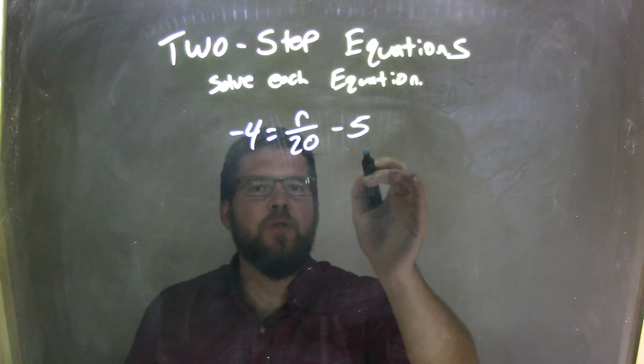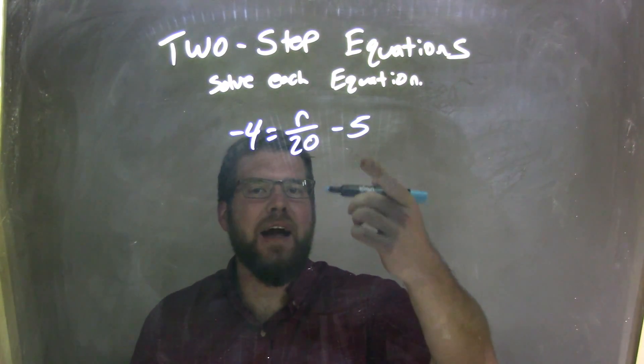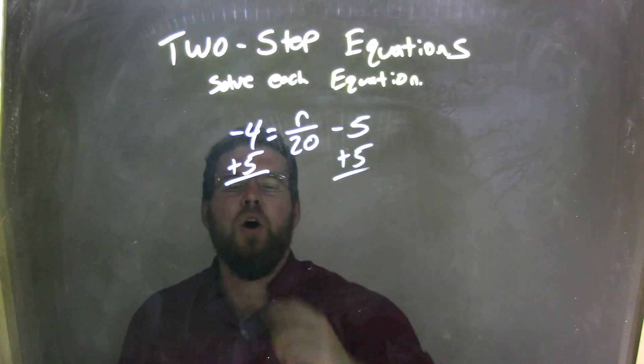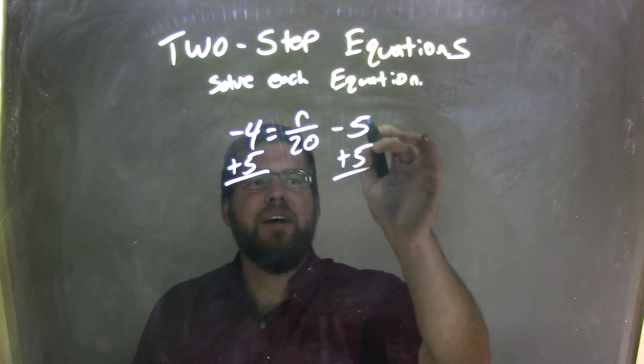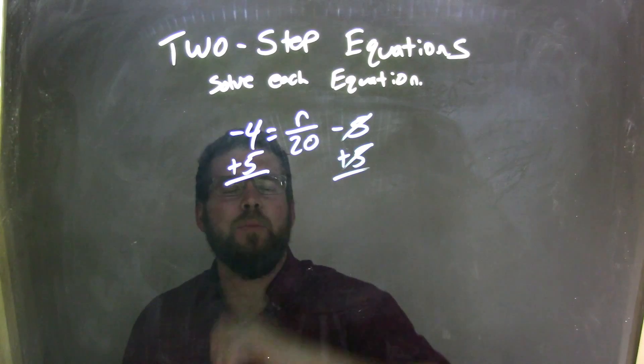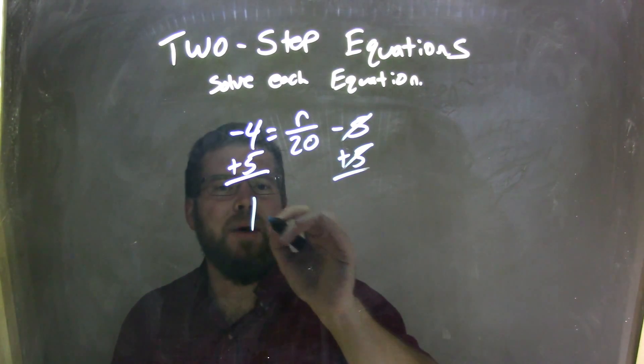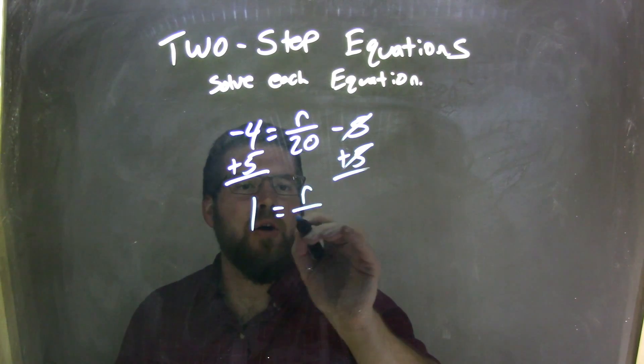Well, I have a minus 5 here, so the opposite of that subtraction is addition. I'm going to add 5 to both sides. What that allows me to do, the 5s cancel here, and I have negative 4 plus 5. Negative 4 plus 5 is 1, so it's a positive 1 equals r over 20.